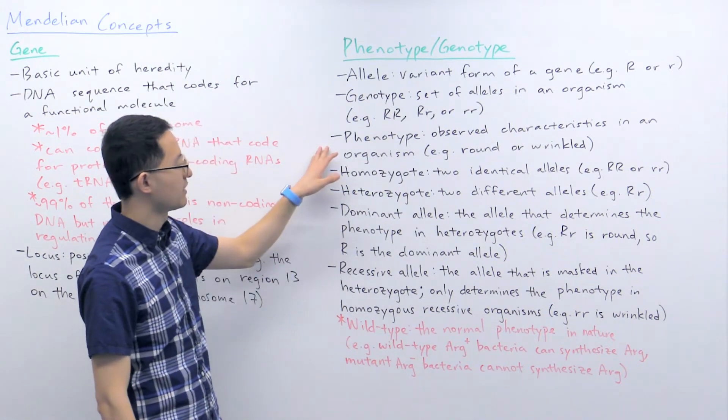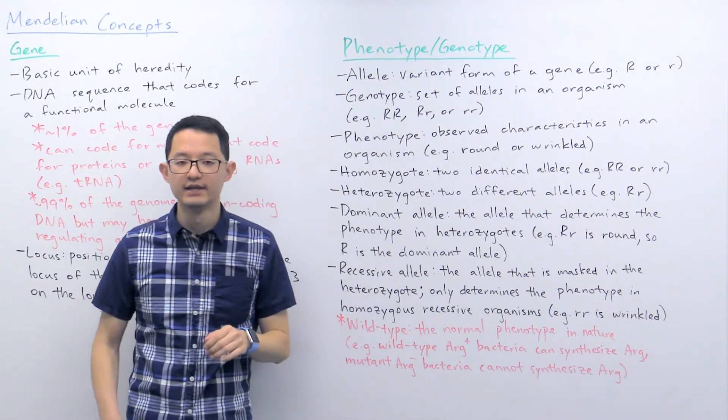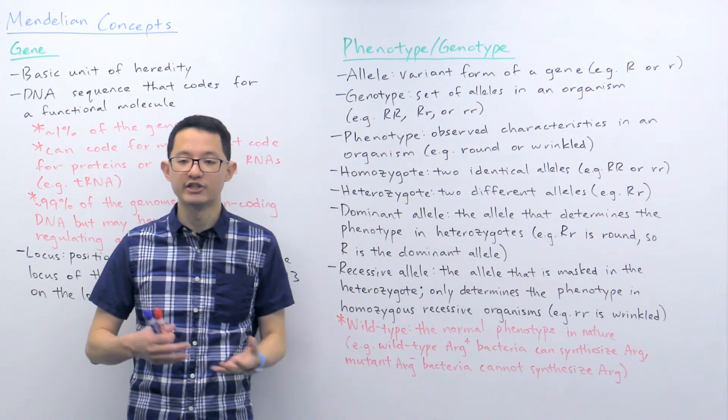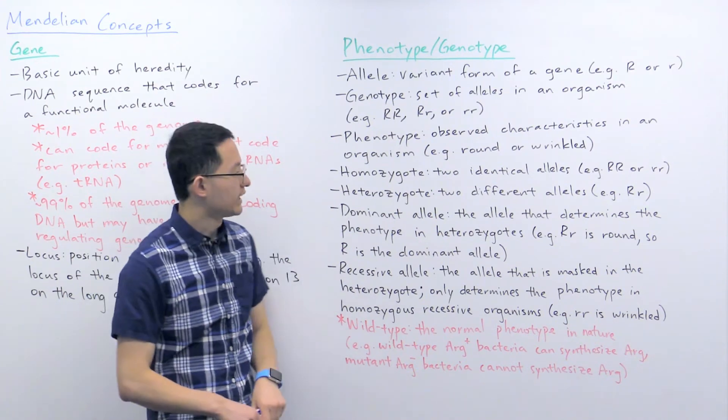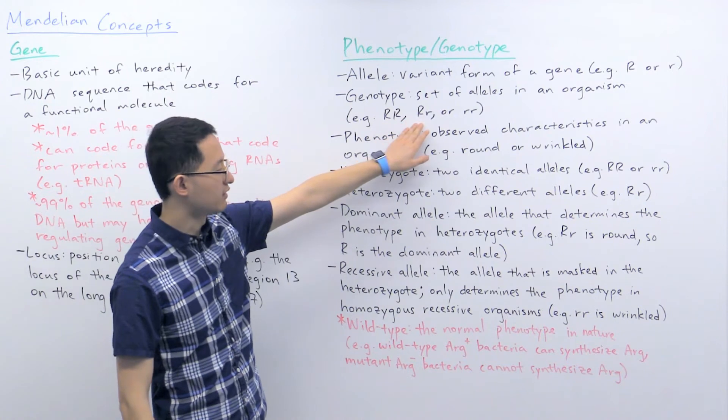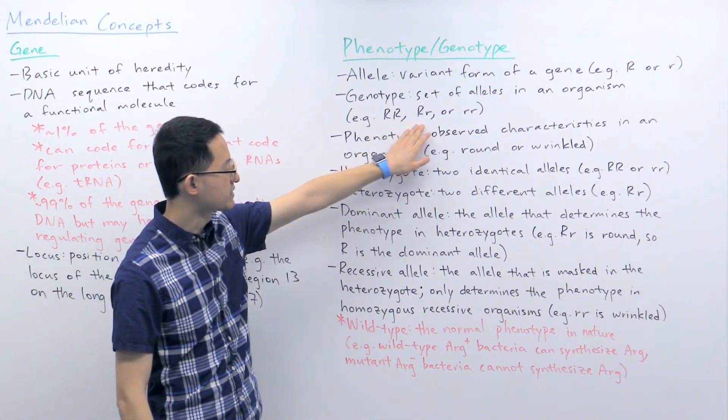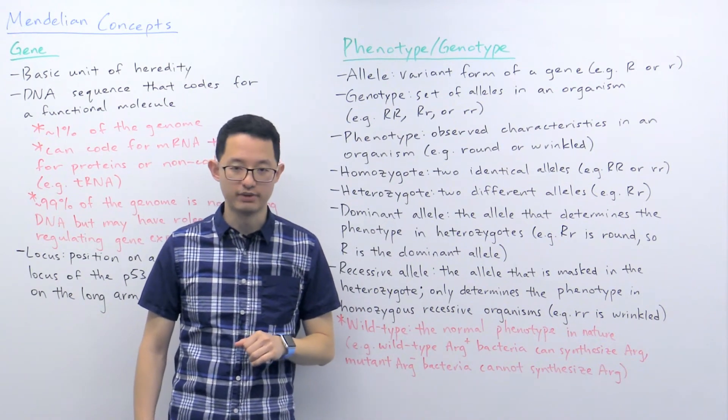The phenotype is looking at the observed characteristics in an organism. So this is looking at the pea shape, whether it is round or wrinkled. And you might recall that both big R big R and big R little r have round pea shapes, and little r little r has a wrinkled shape.